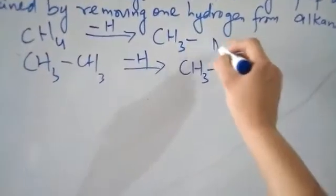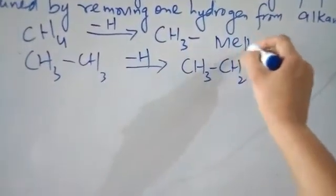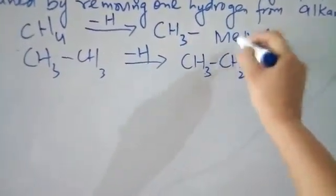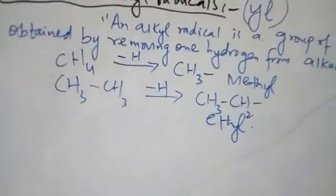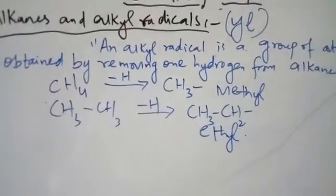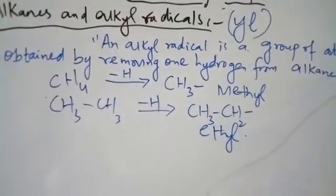This upper radical is the methyl radical, and the lower radical is the ethyl radical. So these are groups of atoms which are obtained by removing one hydrogen from an alkane.